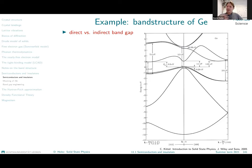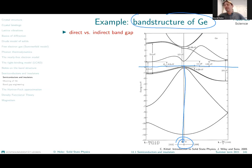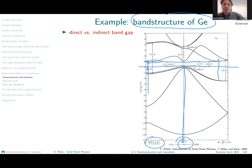Semiconductors are also characterized by the type of their band gap. We distinguish between direct and indirect band gaps. Looking at the band structure of germanium, we can clearly see that the top of the valence band is at the gamma point, whereas the bottom of the conduction band lies elsewhere — along a certain direction in reciprocal space.